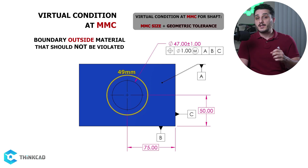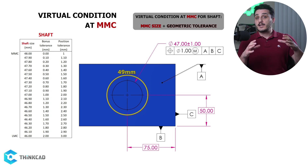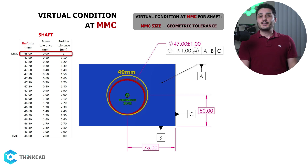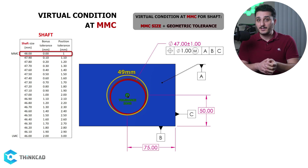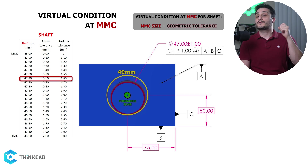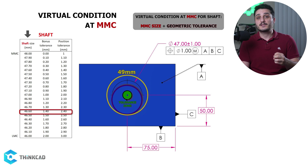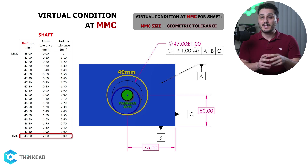Let's approach it by looking at our table. Think about the worst case when you try to make this part fit into our other part with the hole. If our boss feature is the largest size it can be, which is MMC, and its position is as far as it can be, we have our worst case. As your size gets smaller, you're gaining bonus tolerance the exact amount, which means your worst case boundary stays the same in all cases. Try to add any shaft size to its geometric tolerance — it always comes to 49 millimeters.